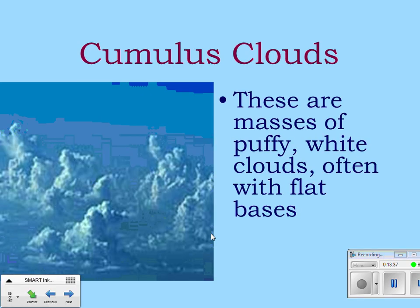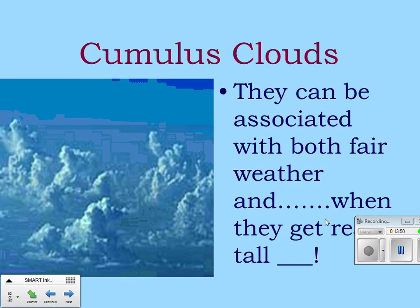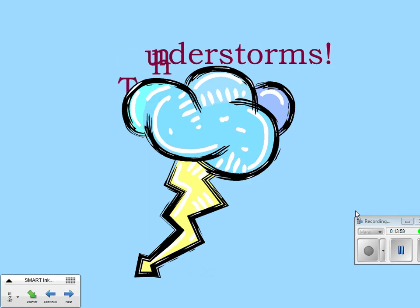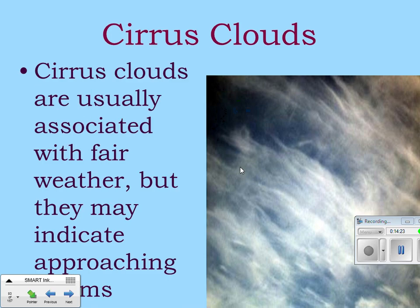Cumulus clouds are masses of white, puffy, often flat-based clouds that form when air currents arise. They can be associated with fair weather, but when they get really tall, they're also associated with thunderstorms. Cirrus clouds are high, thin, white, feathery clouds containing ice crystals — they look like wispy pulled-apart cotton balls. They're associated with fair weather but may indicate approaching storms, often preceding large cumulus storm clouds.